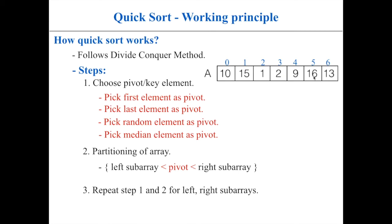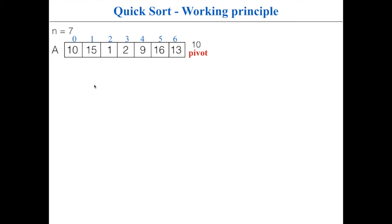Let's consider an example array and apply quicksort in ascending order. The first step is to choose the pivot element — here I'm selecting the first element, 10, as the pivot. When using divide and conquer you need two iterators: start and end. Initially, start points to the starting index and end points to the ending index of the array. You increment start only when the element it points to is less than or equal to the pivot.